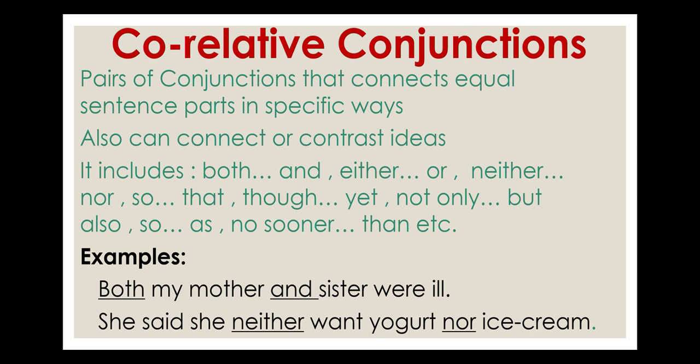More correlative pairs include: not only...but also, so...as, no sooner...than. Children, you must learn these pairs by heart, because if one word of a pair is given in a sentence, the other word of the pair will fill the next blank. Examples: 'Both my mother and sister were ill.' 'She said she neither wants yogurt nor ice cream.'